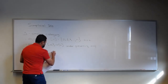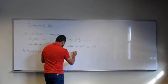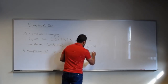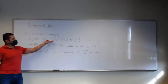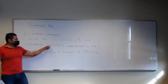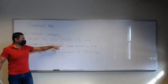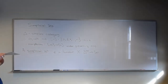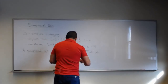A simplicial set is a functor from the opposite of delta to sets. What we're doing is assigning to every one of these objects a set. And then for every order-preserving map there's a map of sets going the other way — it's contravariant.